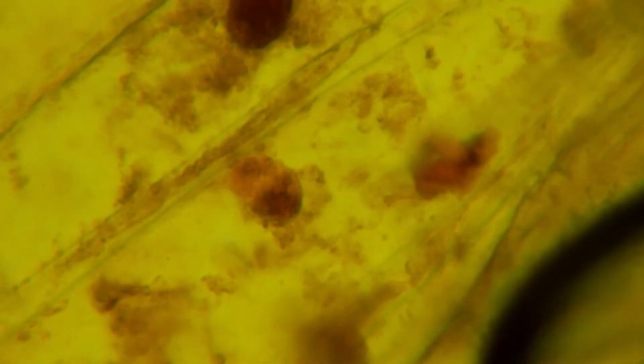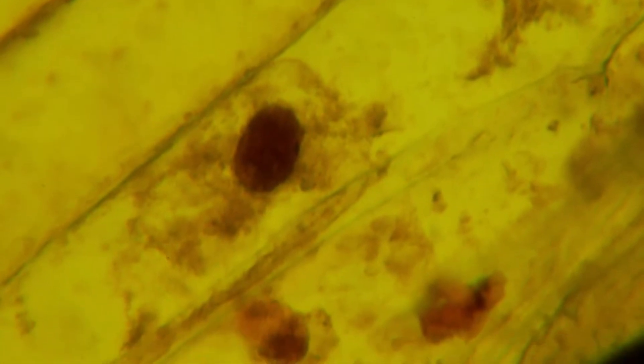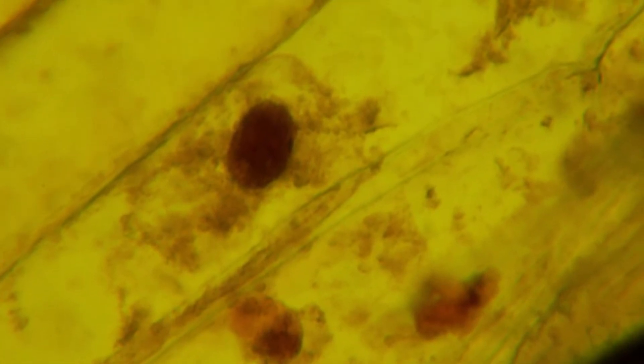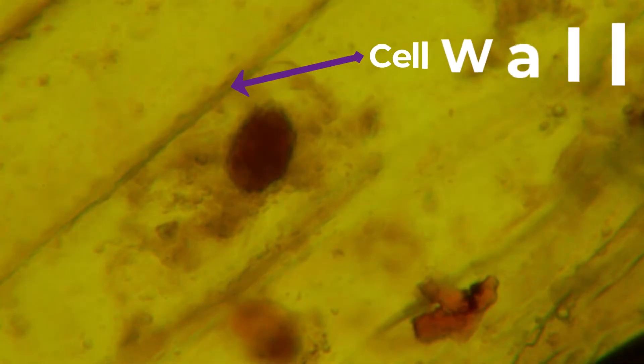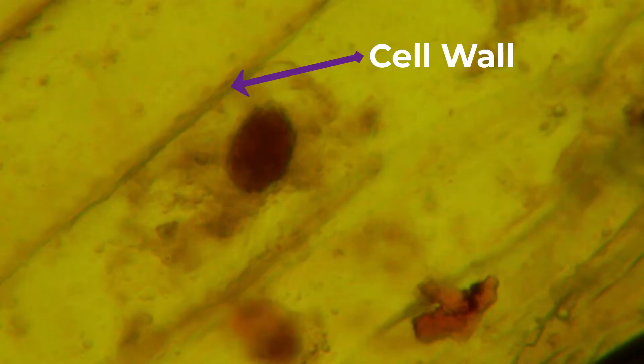When we look at these cells at the high power, we can see that they have six sides — they are hexagonal. The most prominent feature of the cells are the cell walls. We can see a thick cell wall, which is only found in plant cells and not in animal cells. These cell walls are clearly visible at the high power.